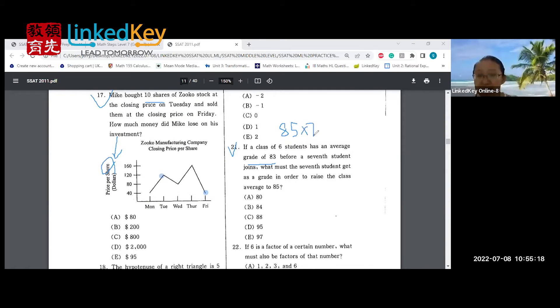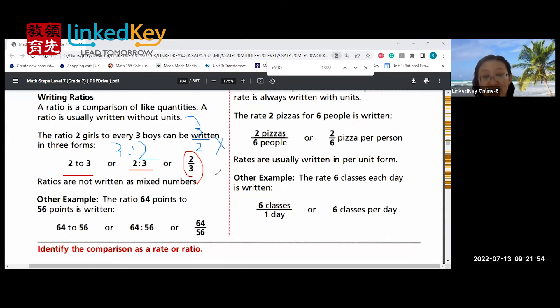Students must be 85 times 7, and then this total grade is contributed by the first six students and the last one. So the first six students, you have 83 multiplied by 6, but you're not allowed to write it.